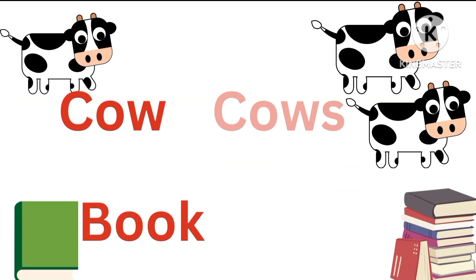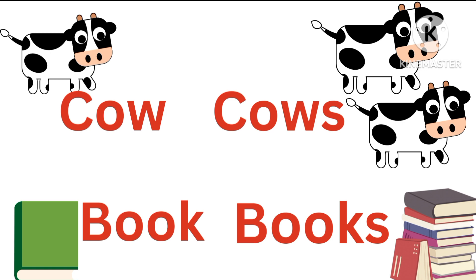In the next example, we do the same. Cow becomes cows by adding S. Book becomes books. Book is one in number, so it is considered singular. And books is more than one, so it is considered plural.